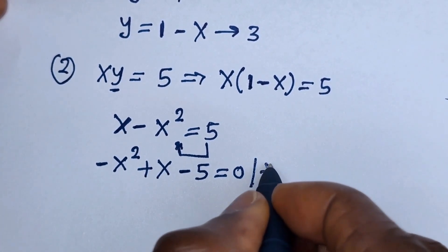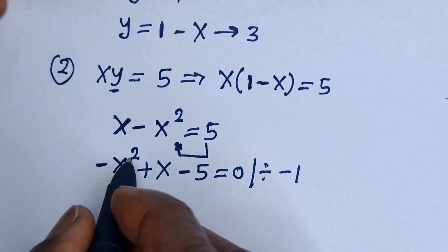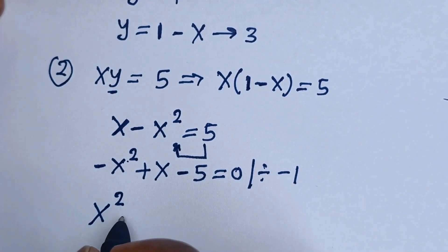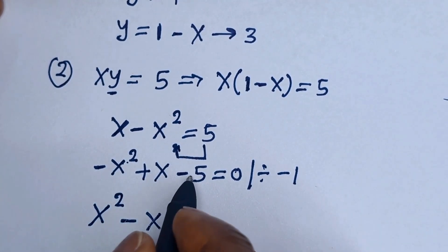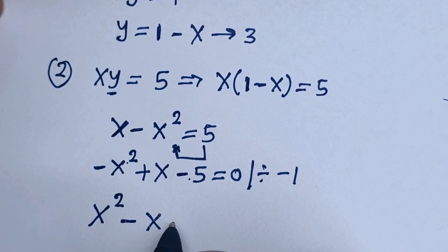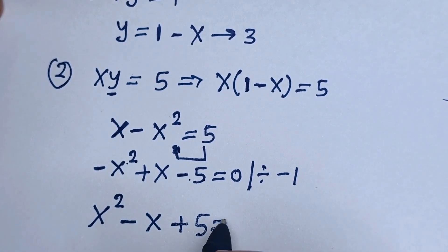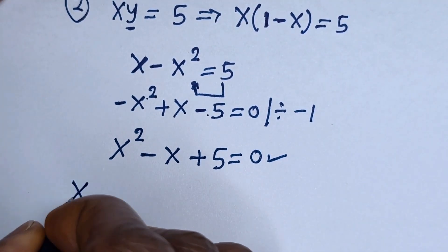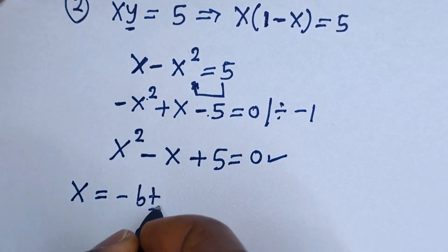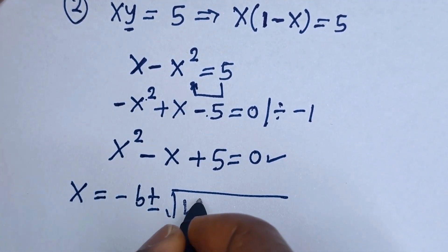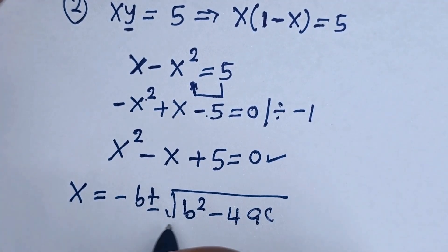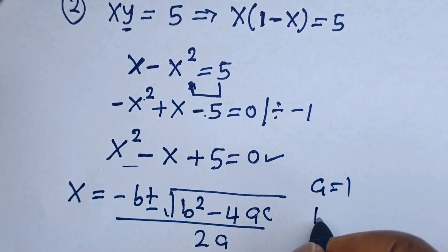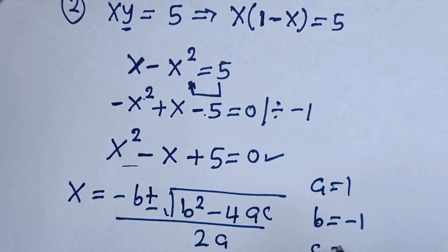Bringing everything to one side, it becomes negative S squared plus S minus 5 equals 0. Then let's divide the whole equation by negative 1: S squared minus S plus 5 is equal to 0. This is a quadratic equation. Using the quadratic formula, A is equal to 1, B is equal to negative 1, and C is equal to 5.